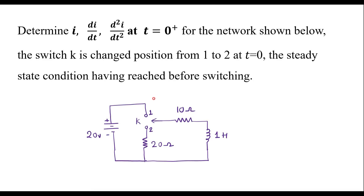This is the given circuit. Here we have a switch k. It is said that the switch will move from position 1 to 2 at t equal to 0, and that the steady state condition has been reached before switching. It means that when the switch was connected to position 1, the circuit had reached steady state. We know that at steady state, the inductor acts like a short circuit.